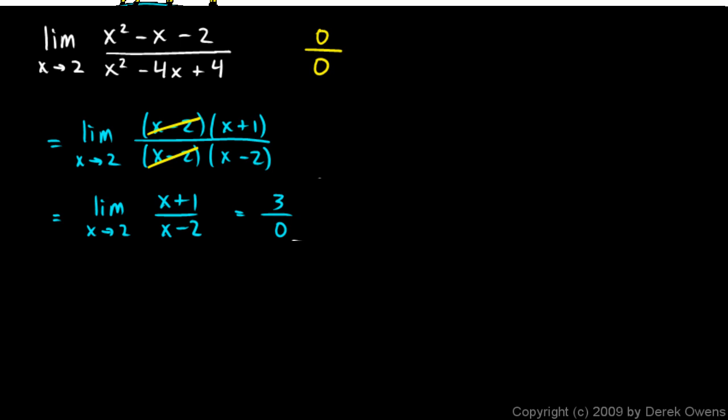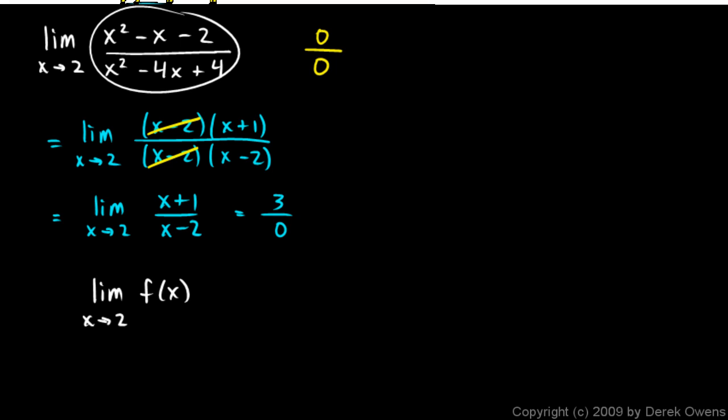...we have a vertical asymptote. So we would say the limit as x approaches 2 of this function, I'll just write f(x) instead of rewriting all of that, the limit of that function does not exist. And instead there's a vertical asymptote at x = 2.